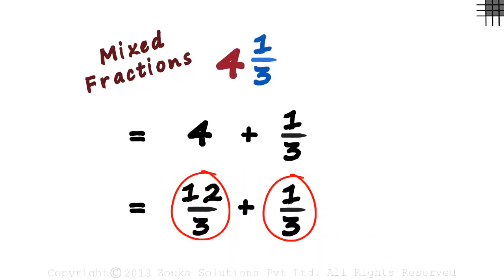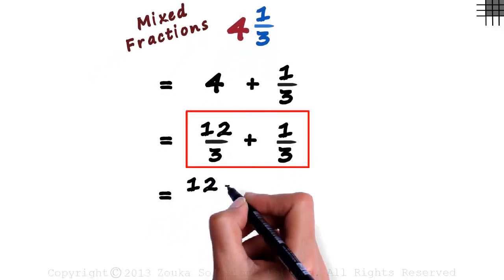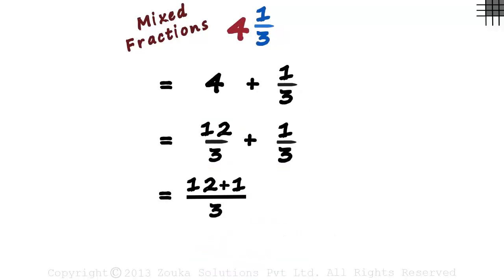When two fractions having the same denominator are added, we can simply add the numerators over the common denominator. This can be written as 12 plus 1 by 3. Add the numerators over the denominator, and it becomes 13 by 3.